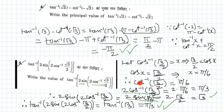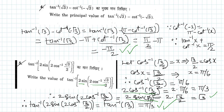Therefore, cos inverse of root 3 by 2 is equal to pi by 6 radian. We have found the innermost value. There is a 2 here, so 2 times cos inverse of root 3 by 2 is equal to 2 times pi by 6, which is equal to pi by 3.